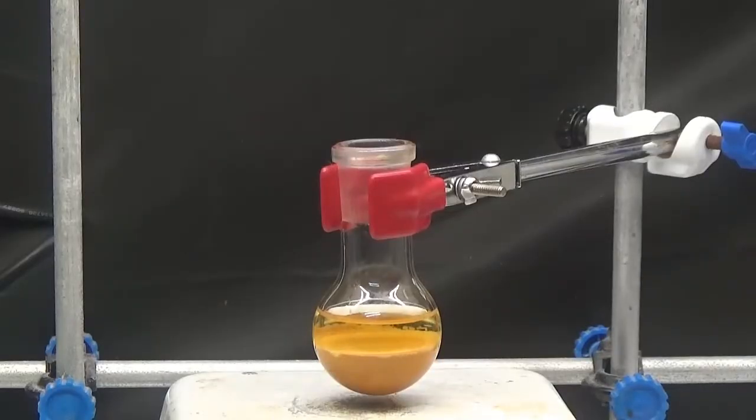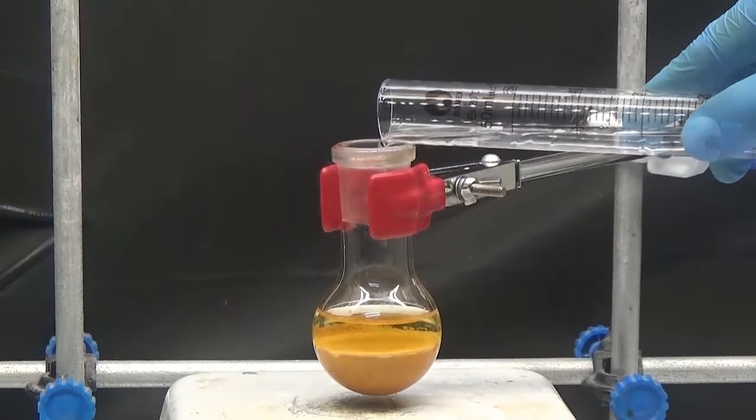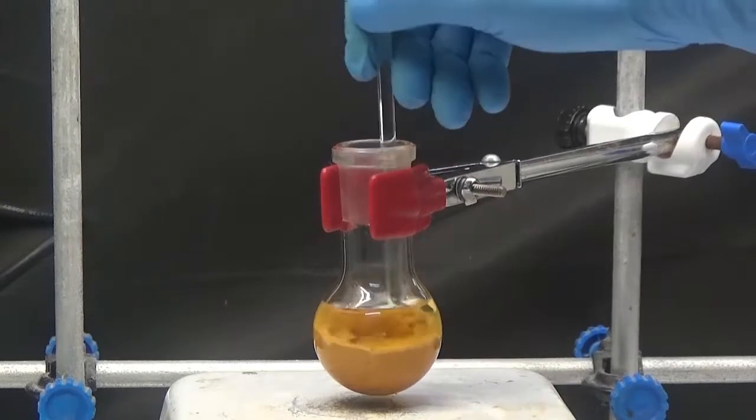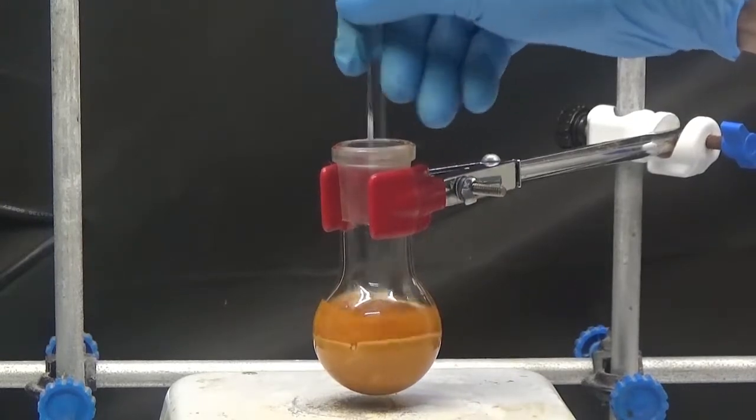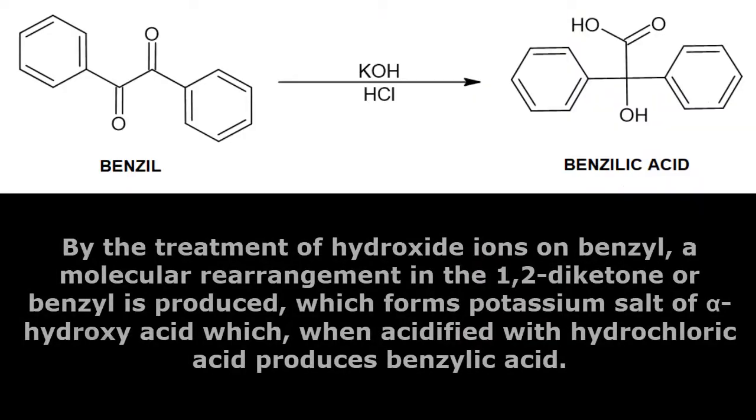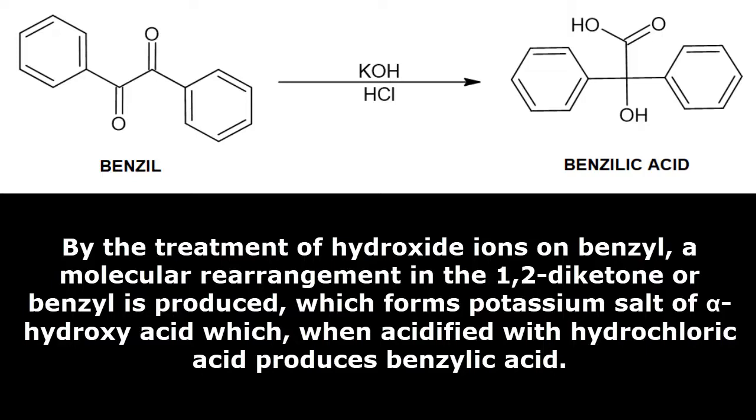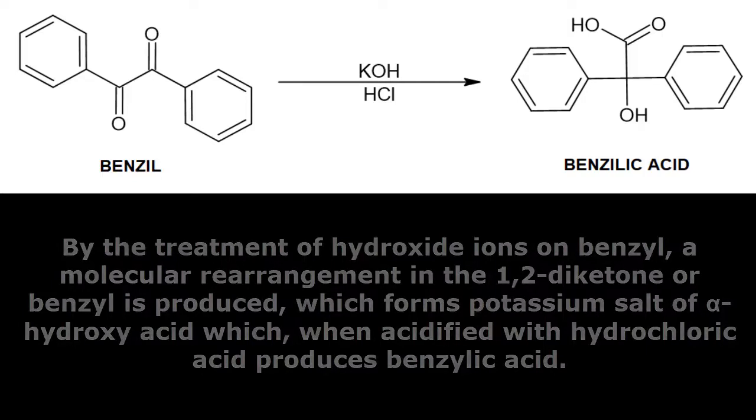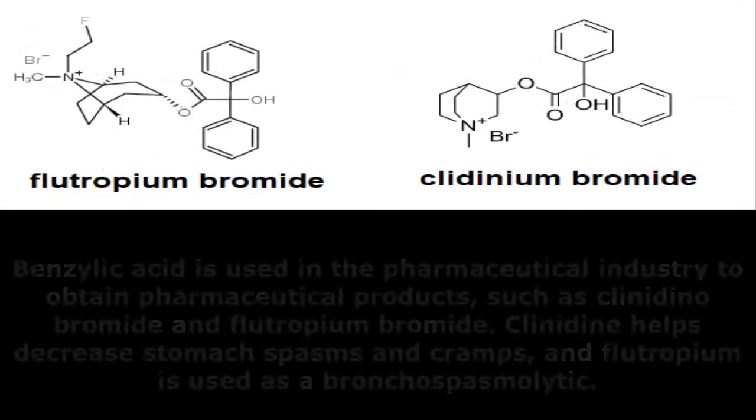In this video we will see how benzylic acid is obtained by rearrangement making benzyl reaction with potassium hydroxide. By the treatment of hydroxide ions on benzyl, a molecular rearrangement in the 1,2-diketone or benzyl is produced, which forms potassium salt of alpha-hydroxy acid which when acidified with hydrochloric acid produces benzylic acid.